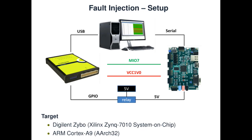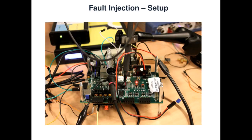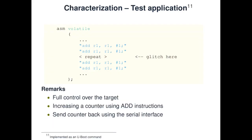The target today is a Digilent Zybo board based around a Xilinx system-on-chip, and within this chip there is an ARM Cortex-A9 core which will be the target of this demonstration. In practice the setup looks like this — a lot of cables everywhere. One of the things we do to determine the robustness of the target is perform a characterization step. We run a very simple program that initializes a counter to zero and executes a stream of add instructions. If our glitch is successful, the counter value will change. Note that we have full control over the target here, which is typically not the case for secure boot.